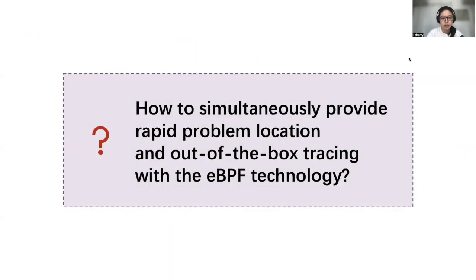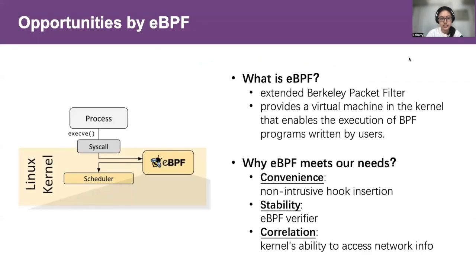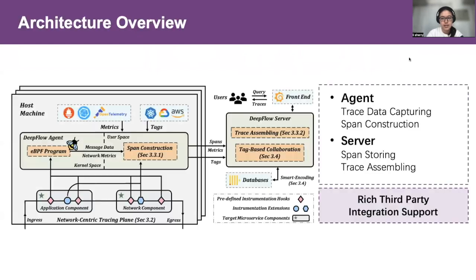So, how does DeepFlow meet all these requirements? The eBPF technology inspired us. In short, it provides a virtual machine in the kernel that enables the execution of BPF programs written by users at designated hook points, which perfectly matches all our demands. At the highest level, DeepFlow includes two components: agent and server. An agent is deployed in each host machine to collect trace data in kernel space and construct spans in user space. The centralized server stores the spans collected from all agents and assembles them into traces. We also provide rich third-party integration support, including spans under OpenTelemetry formats.